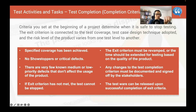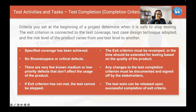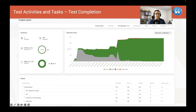Test completion: what is the completion criteria? It's what you set at the beginning of the project - when is the time to stop. The exit criteria is connected to test coverage, test case design techniques adopted, and the risk level of the product, which varies from one test level to another. The criteria include: specified coverage has been achieved, no show-stoppers or critical defects have been logged, very few non-critical or low-priority defects that don't affect product usage, and the business has signed off. If exit criteria has not been met, the criteria must be revamped or testing time extended, and any changes must be documented and signed off by stakeholders.